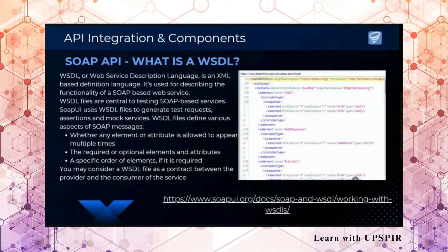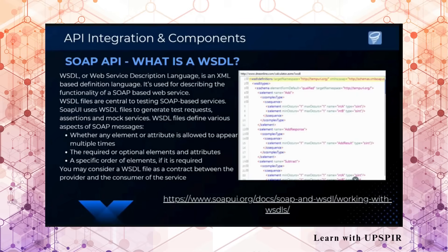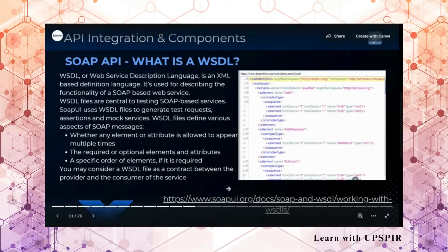WSDL, or Web Service Description Language, is an XML-based definition language used for describing the functionality of SOAP-based web services. WSDL files are central to testing SOAP-based services. SOAP UI uses WSDL files to generate test requests, assertions, and mock services. WSDL files define various aspects of SOAP messages. When you write code, you can generate your WSDL, and once generated, this becomes your touchpoint — you may consider the WSDL file as a contract between the provider and the consumer of the service.